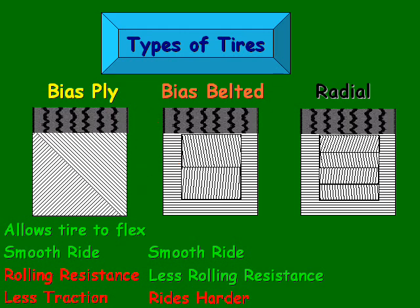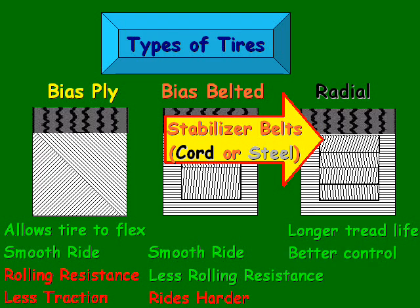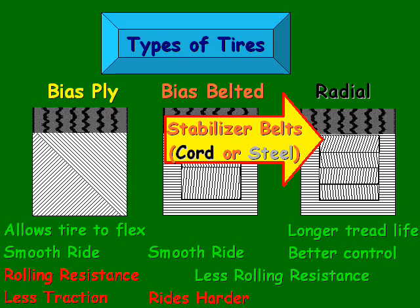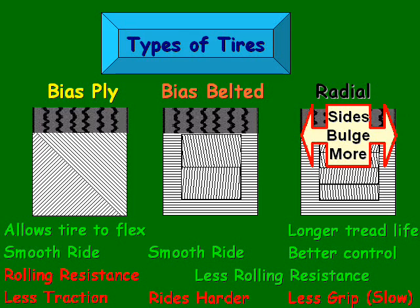Lastly, we have the radial tires. They have stabilizer belts that are also made of cord or steel, but they have even more of them. Some of the advantages of radial tires are longer tread life, better control or grip, and typically less rolling resistance. One of the disadvantages is you typically will have less grip at slower speeds, though the faster you go, that works in the inverse. Another noticeable difference is that the sides bulge more than the bias ply or bias belted tires do.